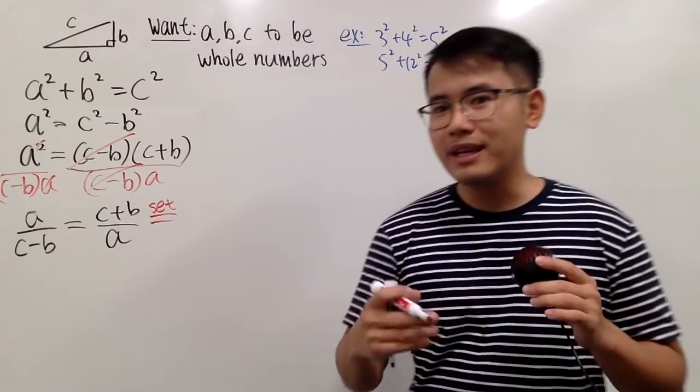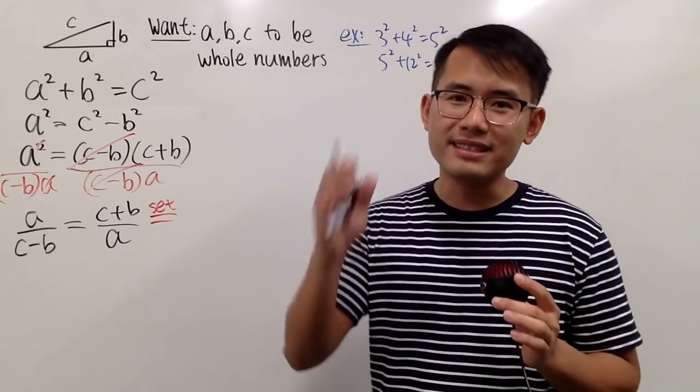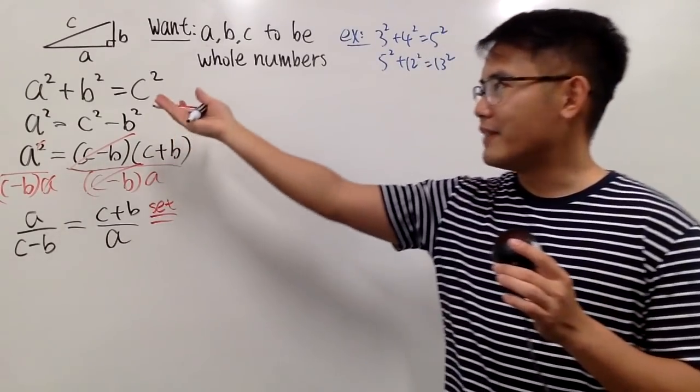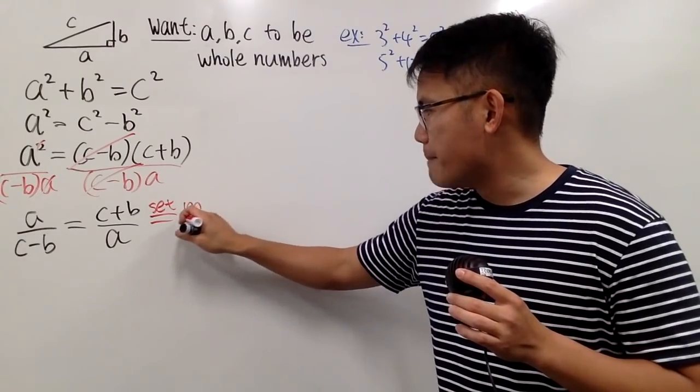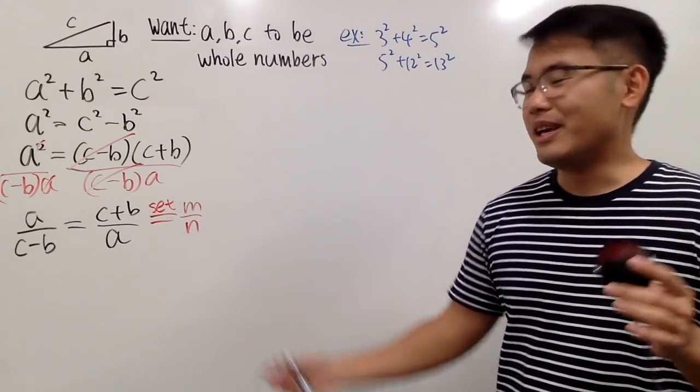And usually when people say, hey, this is a rational number, we say that's A over B. But we have A and B already. So let me pick something else. Let me say M over N.